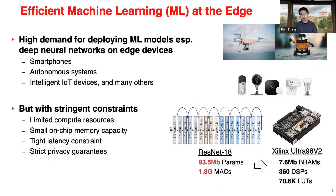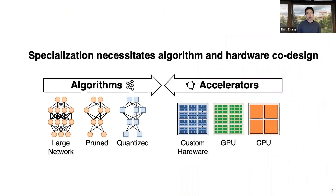If you look at ResNet-18, which is now considered fairly small, even mapping this network to an embedded FPGA — the Zynq UltraScale+ 96 V2 — is non-trivial. For this reason, there are a lot of research efforts focused on specializing deep learning models and hardware accelerators to achieve higher performance and higher energy efficiency. In my research group, we take a co-design approach: building new hardware accelerators not just designed for existing off-the-shelf network models, while also optimizing deep learning algorithms to run more efficiently on emerging hardware, not just commodity CPUs or GPUs.